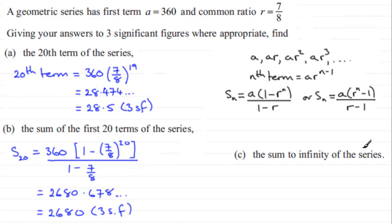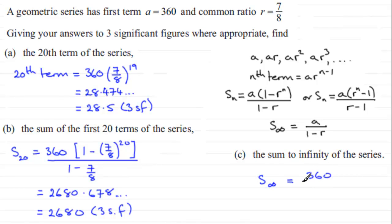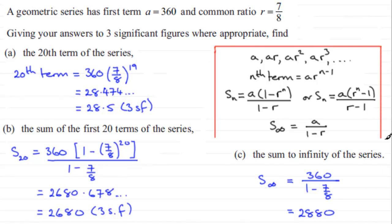For part c, we find the sum to infinity of the series. The sum to infinity only works if r lies between minus one and one — and it does, it's seven-eighths here. In that case, r to the power n tends to zero, so you're left with a over (1 minus r). For us, the sum to infinity equals 360 divided by (1 minus 7/8), which gives 2880. These formulae are very common when working with geometric series, so I'd encourage you to learn them.